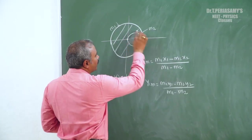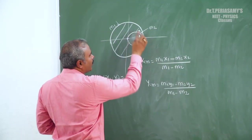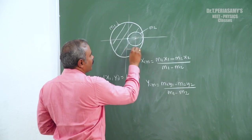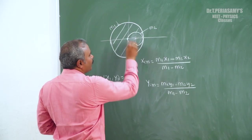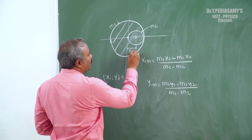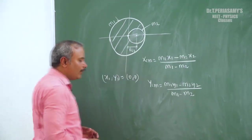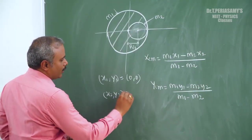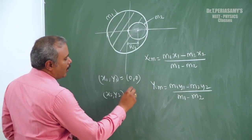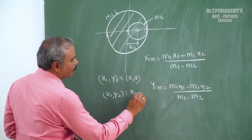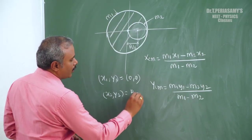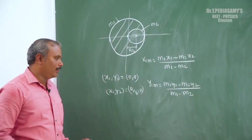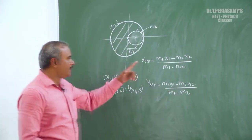Consider the radius. The total radius is R, so the removed portion has its center at R by 2 from the origin. Therefore x2 equals R by 2, and with R by 4, y2 equals zero. Now let's proceed to find x center of mass.